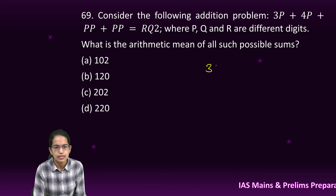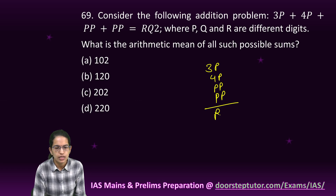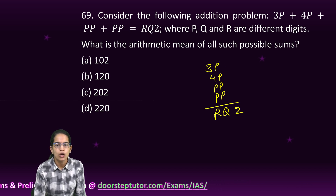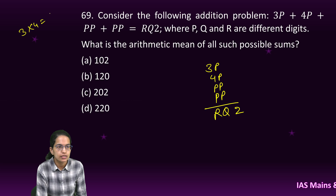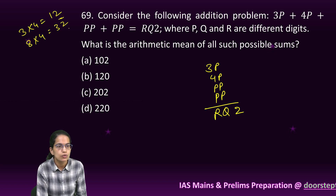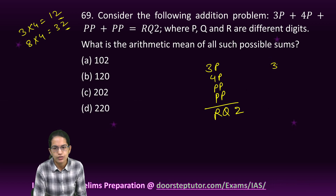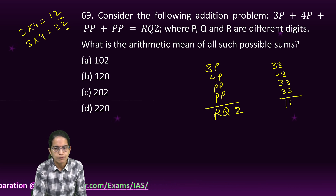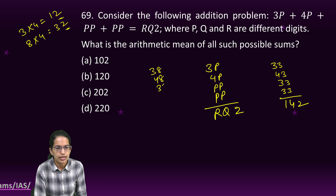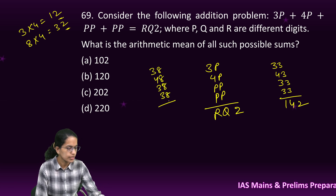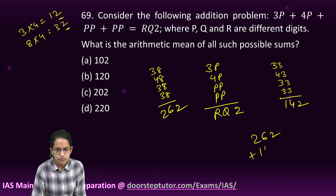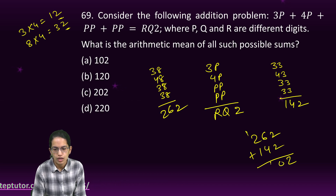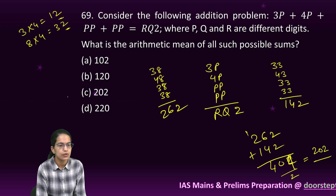The next question: I have to find P such that 3P × 4P × P × P gives a last digit of 2. Checking: 3 × 4 = 12 (last digit 2) and 8 × 4 = 32 (last digit 2). So P can be 3 or 8. For P = 3: 33 + 43 + 33 + 33 = 142. For P = 8: 38 + 48 + 38 + 38 = 262. Adding them: 142 + 262 = 404; average = 404 ÷ 2 = 202, so 202 is the right option.